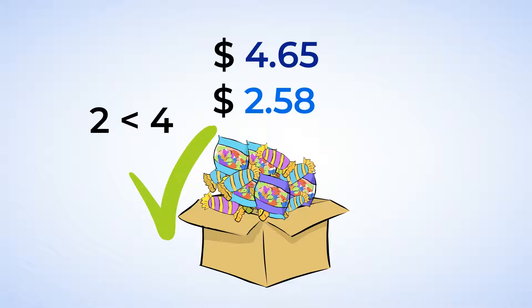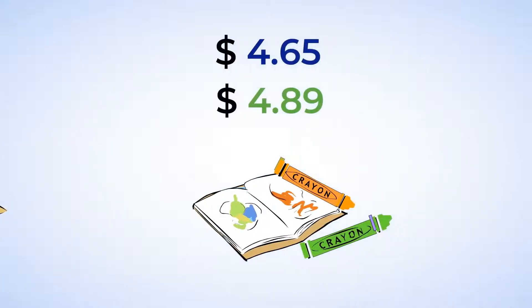But before you buy anything, let's make sure we look at everything. Now let's look at the coloring book and crayons. They cost $4.89. Since both numbers have a 4 in the ones place, we're going to need to look at the next place value. The tenths.